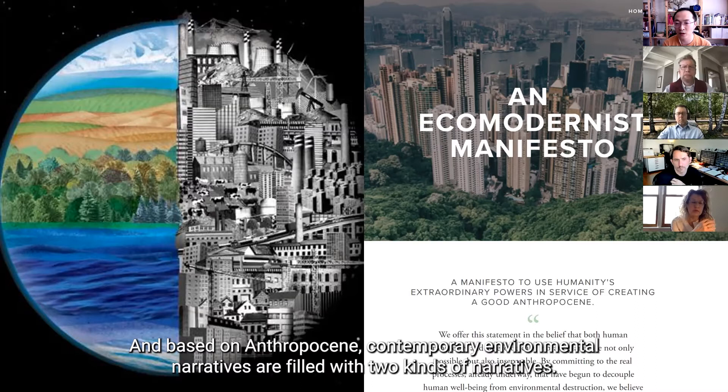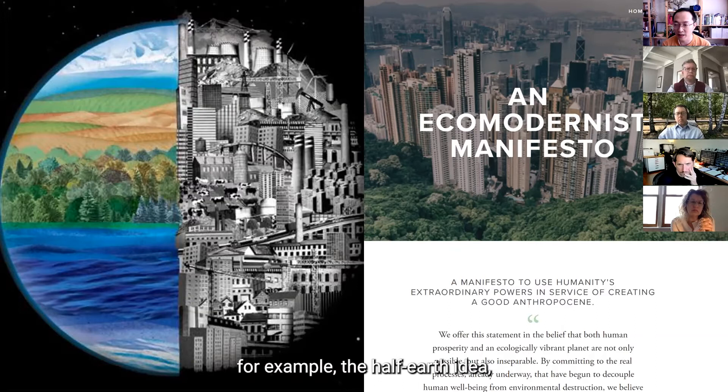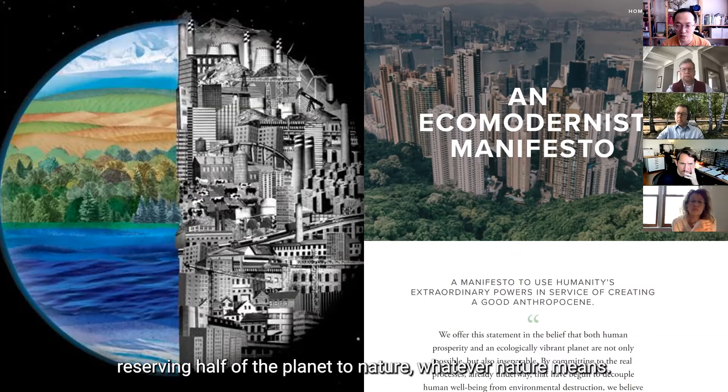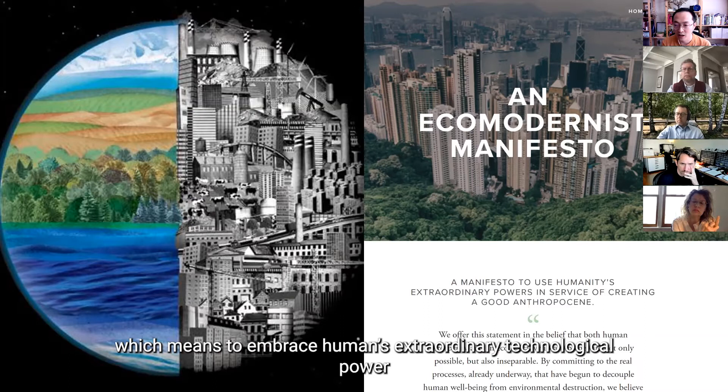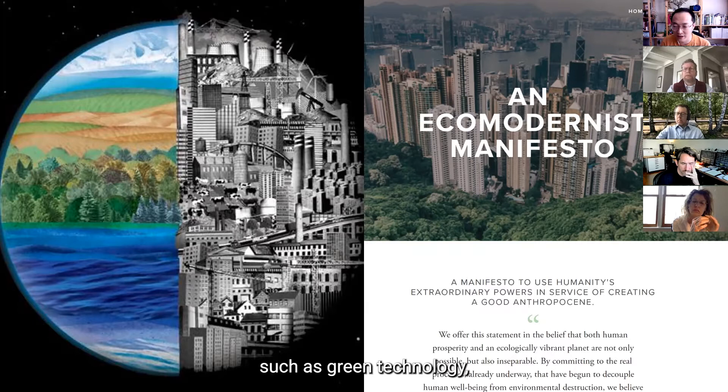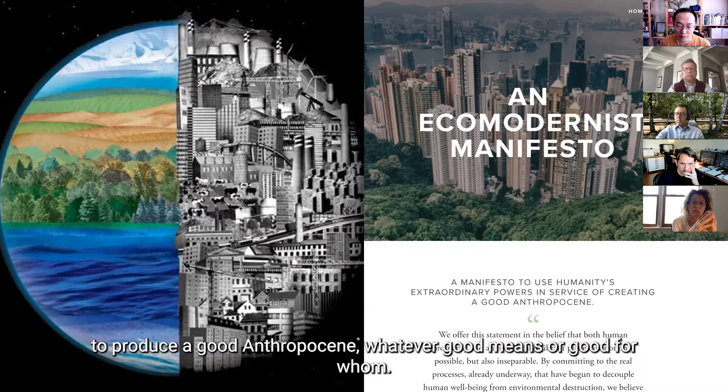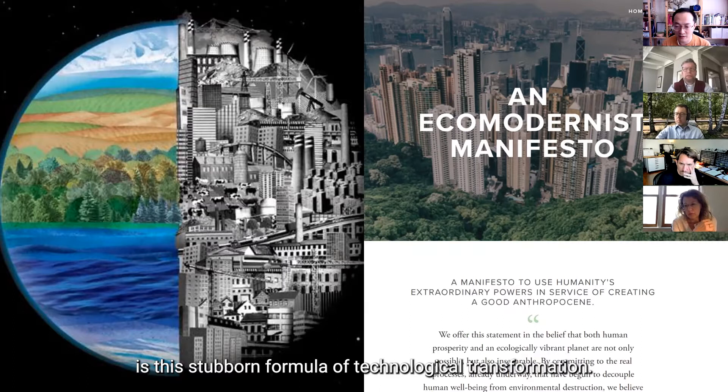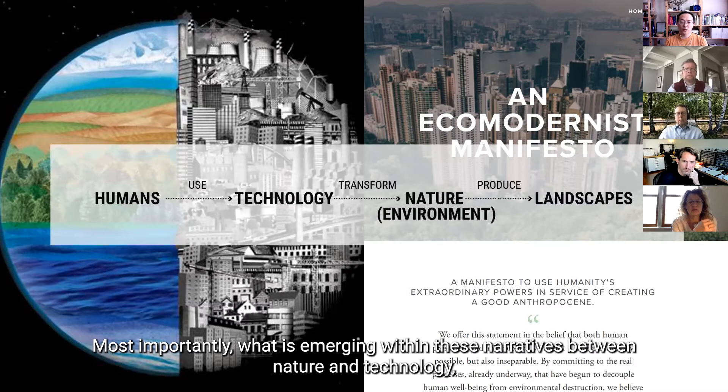And based on the idea of Anthropocene, contemporary environmental narratives are filled with two kinds of narratives. On the one hand, we have this kind of downscaling narrative. And for example, the half-Earth idea, basically reserving half of the planet to nature and whatever nature means. And on the other hand, we have this upscaling idea, which means to embrace humans' extraordinary technological power, such as green technology, to produce a good Anthropocene and whatever good means or good for whom. The fundament of all of these semi-problematic reasonings is this stubborn formula of technological transformation.